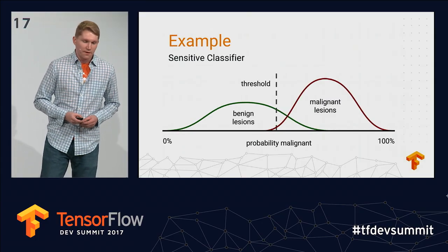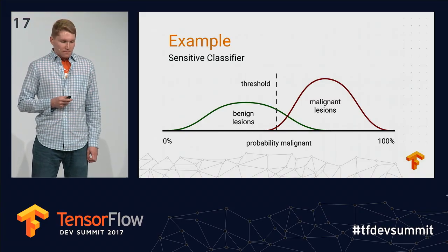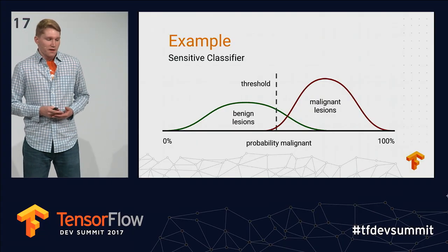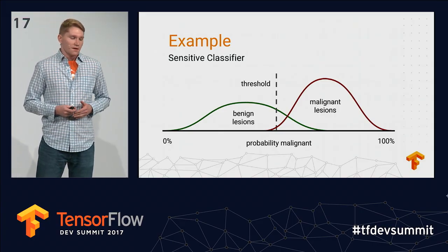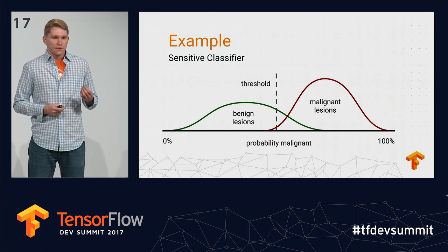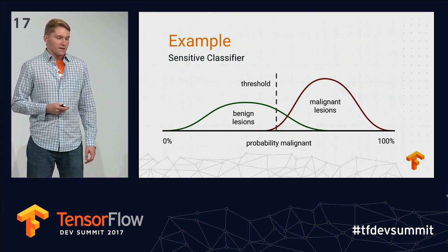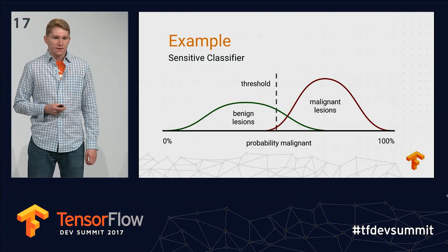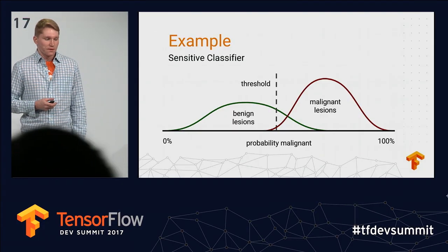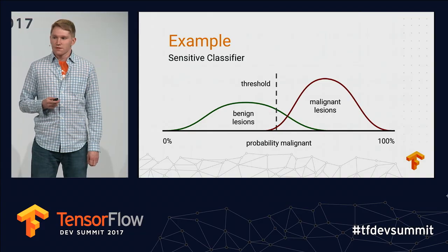For our classifier, we output a malignant probability. Imagine we fed the same images through and got those probabilities — sensitivity would be the percent of malignant lesions that fall to the right of some chosen threshold, and specificity would be the percent of benign lesions that lie to the left. We can vary this threshold to get a whole range of sensitivity and specificity pairs.